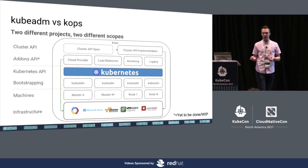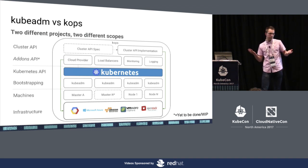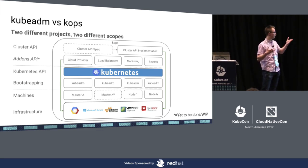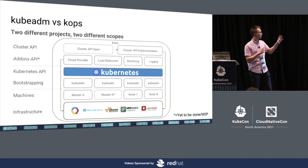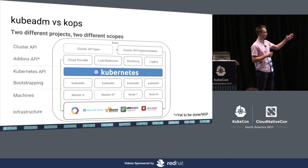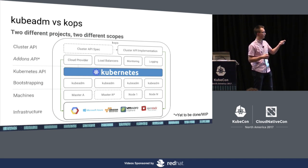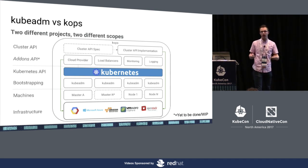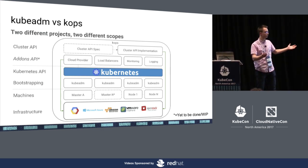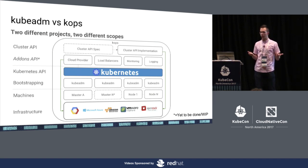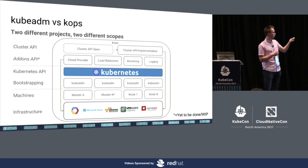People often ask me: what is the difference between KubeADM and KOPS — are they competing? They aren't competing as they have totally different scopes. KubeADM only executes locally on the master with a very local view, but KOPS has a global view of the cluster, manages the infrastructure, all the machines, bootstrapping Kubernetes, and add-ons as well. If you just want a cluster up and running on AWS or GCP with one command, then KOPS is your thing. If you want to build your own Terraform or custom bootstrapper on bare metal, then KubeADM might be a better choice.